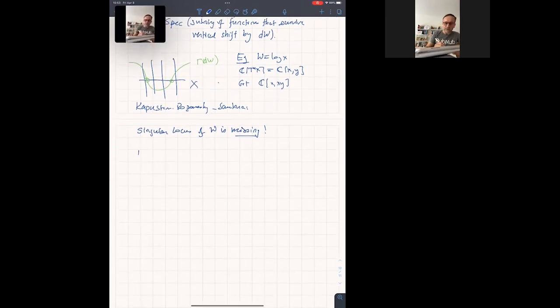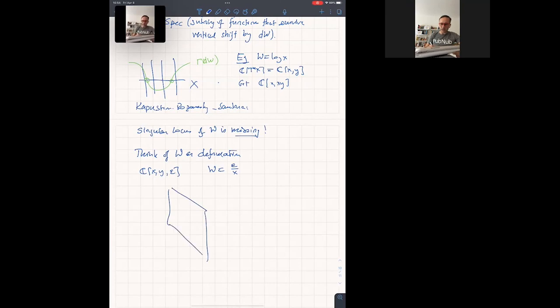One way to honestly see it without invoking some mythology, by the way, so this can be made, there's at least one way of making it precise enough that these calculations make sense. But let's not, we don't even need to invoke that. What we need to do is to think of W as deforming the case W equals zero, the category of coherent sheaves. So think of W as deformation. So we're looking at C of X, Y, and epsilon, and the super, but the epsilon is a parameter and super potential is epsilon over X.